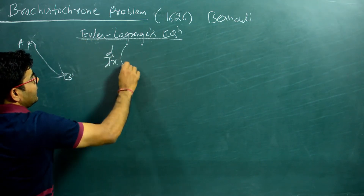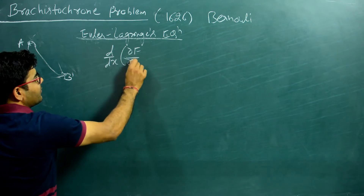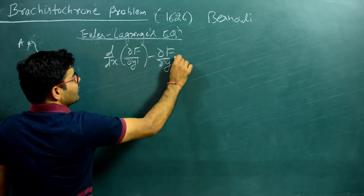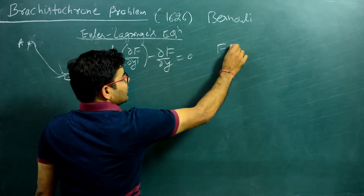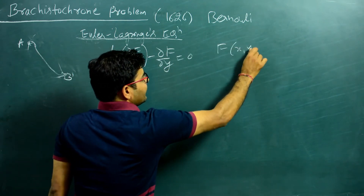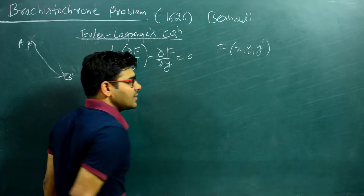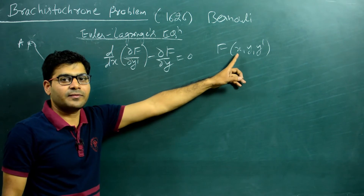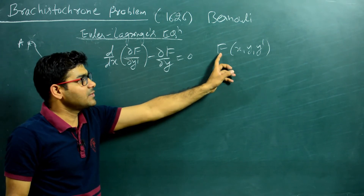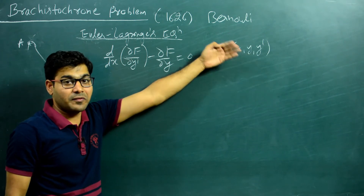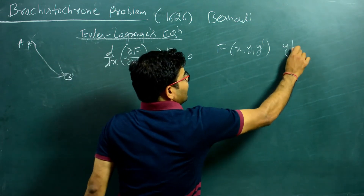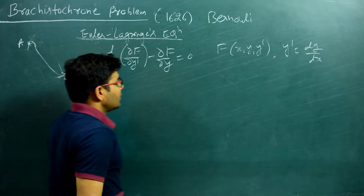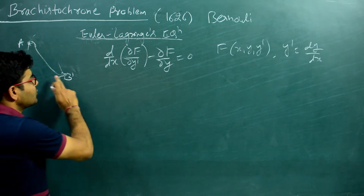The equation that we get by adopting this method is called the Euler-Lagrange equation, which is: d/dx (∂f/∂y') − ∂f/∂y = 0, where f is a functional which is a function of x, y, and y'. A functional in mathematics is, loosely speaking, a function of a function. So y is itself a function of x, and f is a function of x, y, and y', where y' is dy/dx.